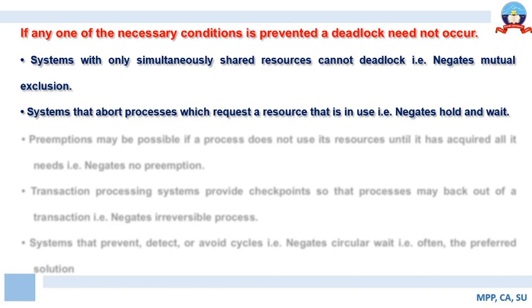The second condition is the system should abort all processes which request for a resource that is being used by some other process. So we need to negate hold and wait. The system aborts all processes that request for a resource being utilized by some other process.